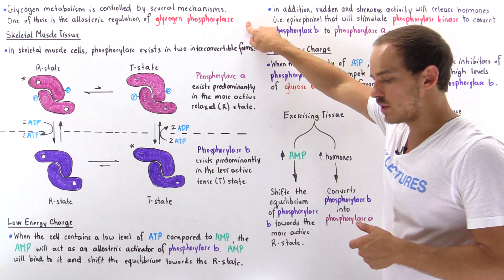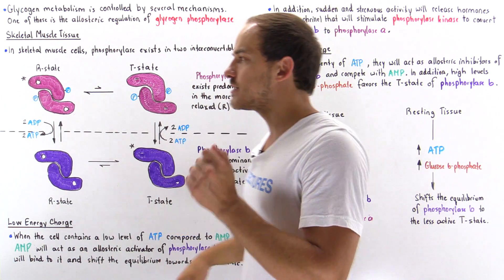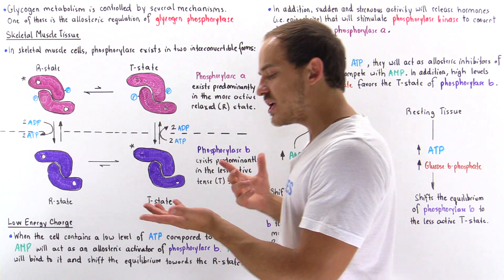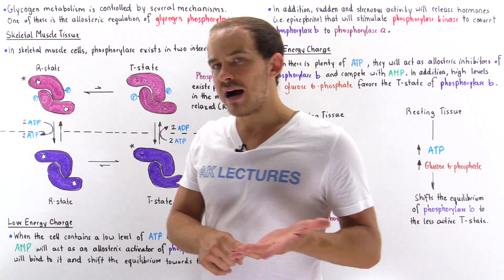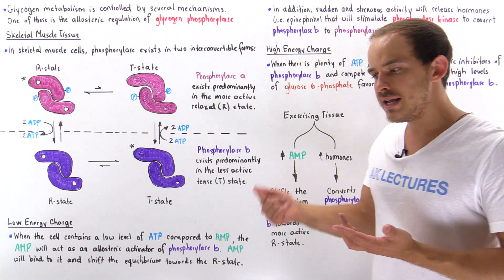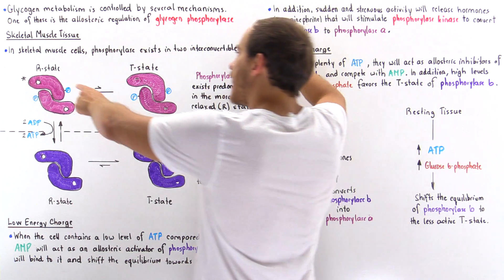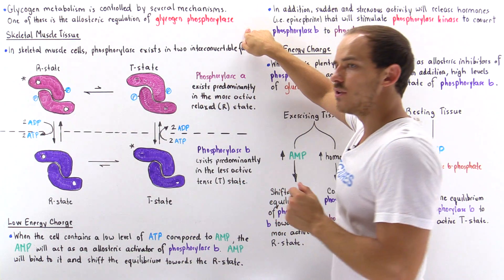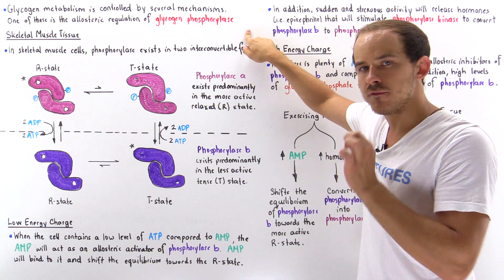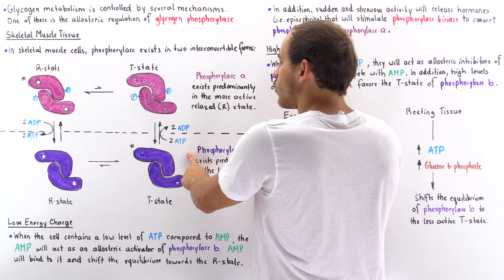Glycogen phosphorylase is a dimer molecule — it consists of two polypeptide subunits — and it is an allosteric enzyme. That means certain molecules inside our cells can either inhibit or activate its activity. Within skeletal muscle cells, phosphorylase exists in two interconvertible forms: phosphorylase A and phosphorylase B.